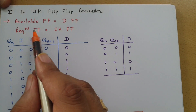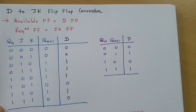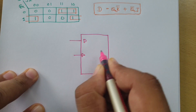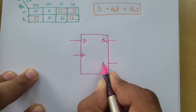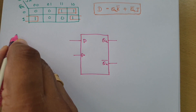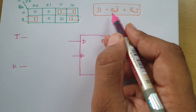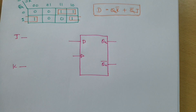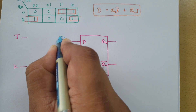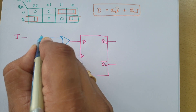The available flip-flop is D flip-flop and the required is JK flip-flop, so we draw the D flip-flop first with input D, a clock, and outputs Qn and Q̄n. We want to translate this into JK, so we add a J terminal and a K terminal. Since D = Qn·K̄ + Q̄n·J, we connect an OR gate for the addition of two terms, with two AND gates feeding into it.